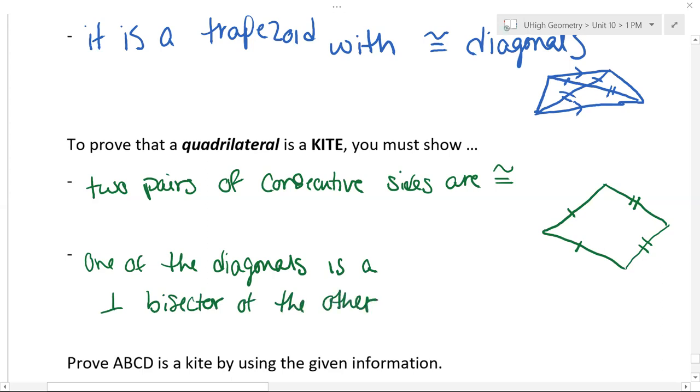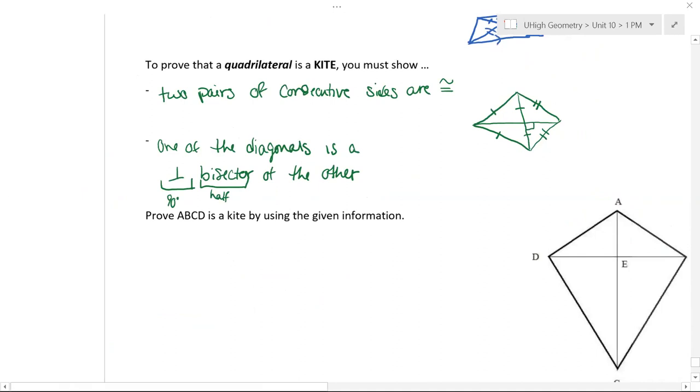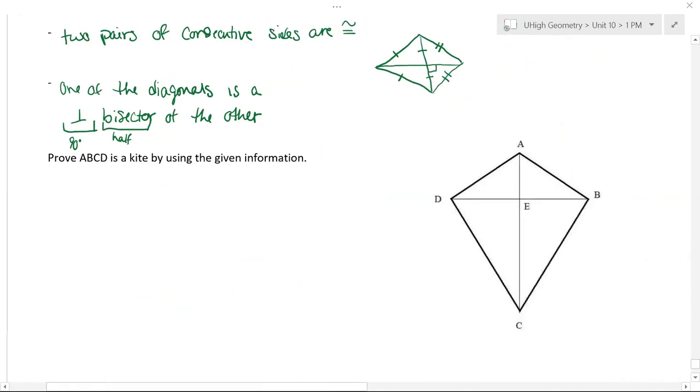So remember, we just need perpendicular, we need them to be 90 degrees. Bisector, we need split in half or two congruent parts. So if I draw this on my kite, I want my two diagonals here. And they have to be perpendicular, we have to have that 90 degrees. And then we have to split one of those diagonals in half. So we are going to prove that ABCD is a kite using the given information. So I know you guys don't have the given information here, so I'm going to write it in my green marker.